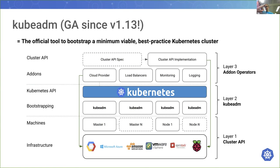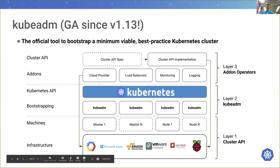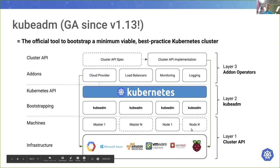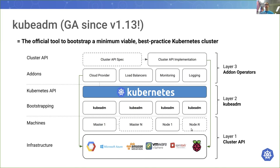So kubeadm, if you haven't heard of it before, here is a conceptual picture of it. At the bottom of the stack you have some kind of infrastructure — a cloud, a set of Raspberry Pis at home, or some on-prem hardware. You have some machines; they can be physical, virtual, or whatever. On each machine you run kubeadm, and then kubeadm executes locally and does what you say it should do.